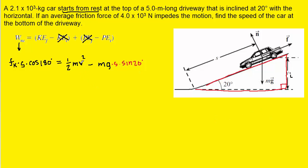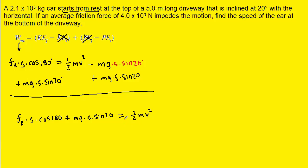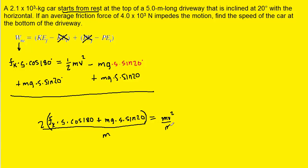Now, we will next rearrange the equation so we can isolate v. And to do that first, we can add the mg times s times sine of 20 to both sides of this equation. And that way, it's going to cancel out on the right-hand side. We could then multiply both sides of this equation by 2. And when we do that on the right-hand side, this one-half multiplied by the 2 will cancel, leaving us with just mv squared. We could then divide both sides of the equation by the mass m so that it cancels out on the right. And then finally, we can take the square root of both sides so that the right-hand side becomes just v.